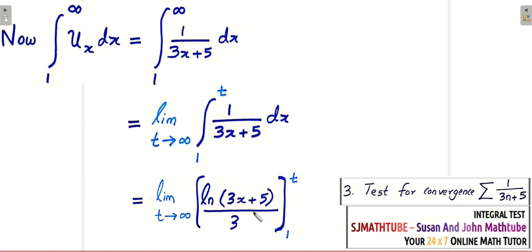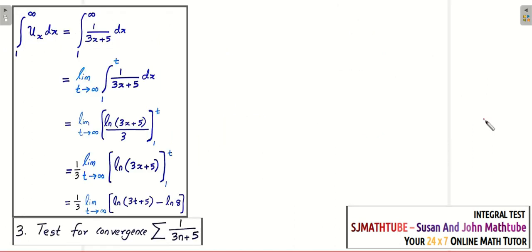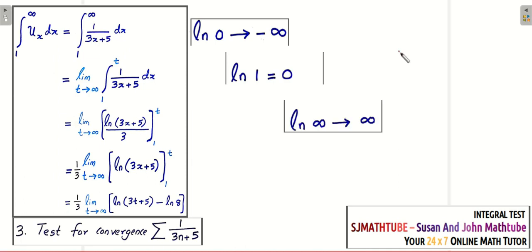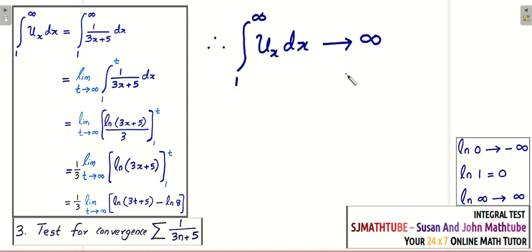Integrating 1/(3x+5) gives ln(3x+5)/3. Applying limits with upper limit T and lower limit 1, we get ln(3T+5)/3 minus ln(8)/3. As T tends to infinity, ln(∞) tends to infinity, so the integral value is infinite. Since the test criteria becomes infinite, the given series is divergent.